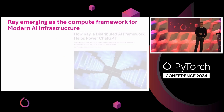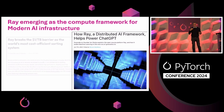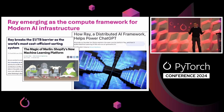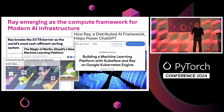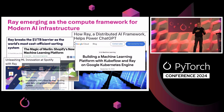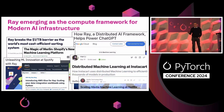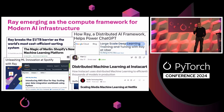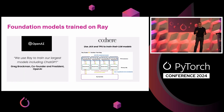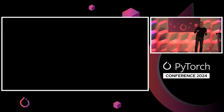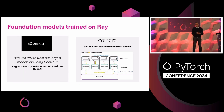Today, Ray is emerging as a compute framework for scaling all kinds of AI workloads, for building modern AI infrastructure and platforms. It's used by many companies like Uber, Amazon, Netflix, Shopify, Spotify, and many more. It has also been used by OpenAI to scale their largest models including GPT-4, by Cohere to train their LLMs, and many more.